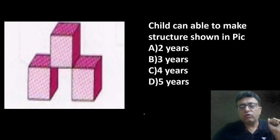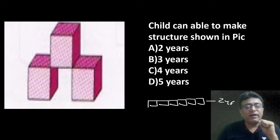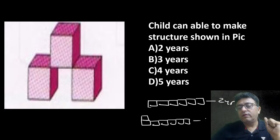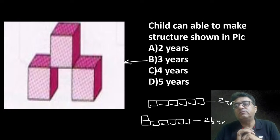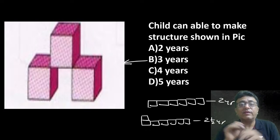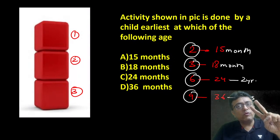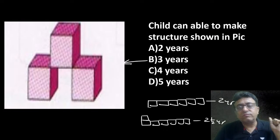This is a bridge or gate made of cubes. Child can make a train at two years. At two and a half years, a slightly different arrangement. But this gate or bridge — one, two, and three cubes — child can make it by three years of age. Gate or bridge at three years of age. Two cubes tower 15 months, three cubes 18 months, six cubes 24 months, nine cubes 36 months, gate or bridge at three years.